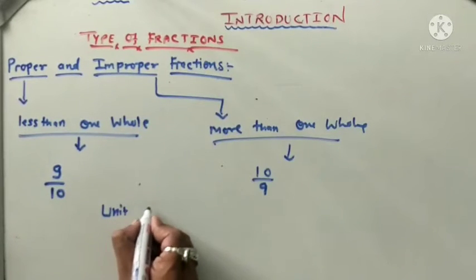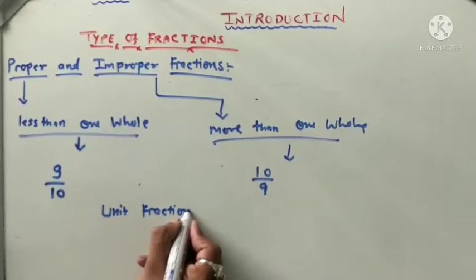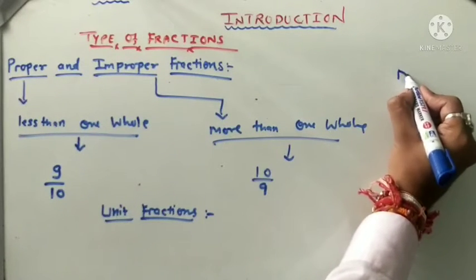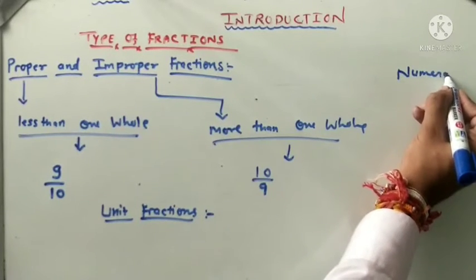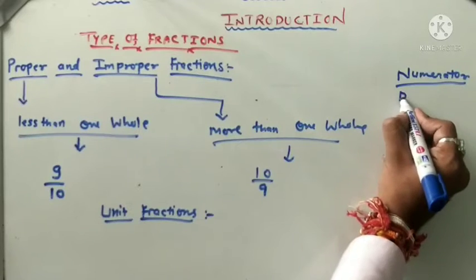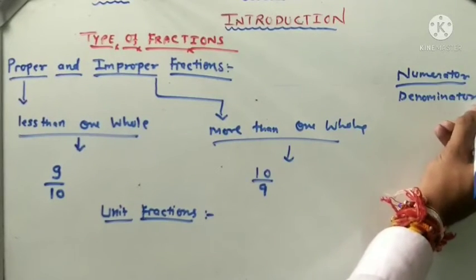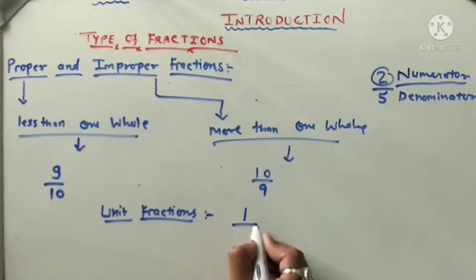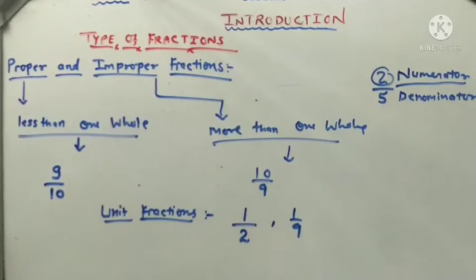Within this, there is also unit fractions. A fraction in which the numerator is 1 is called a unit fraction. For example, in 2 upon 5, the numerator is 2 and denominator is 5. Unit fractions have numerator as 1, like one upon two and one upon nine.